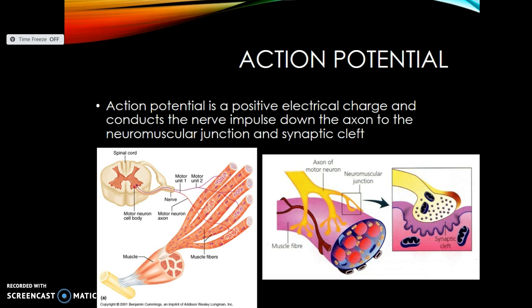The neuromuscular junction, like any junction, is a point where you sometimes have to stop. The reason you have to stop is because of something called a synaptic cleft. The synaptic cleft is a gap between the motor neuron axon, which is carrying the impulse via the action potential, and the muscle fiber.